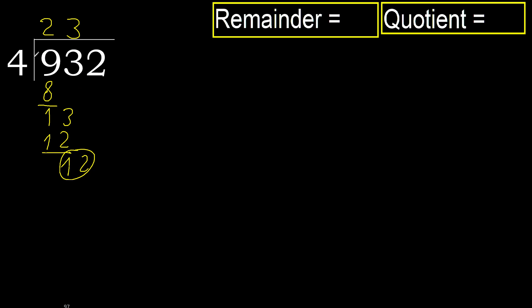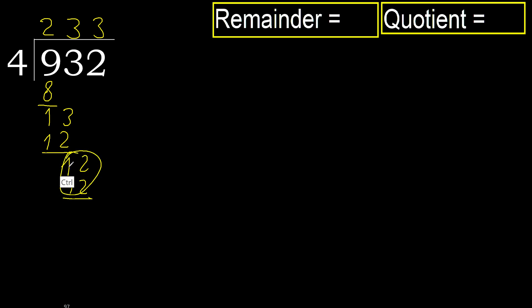Next: 12. 4 multiplied by 3 is 12 — 12 is not greater. Subtract. Next.